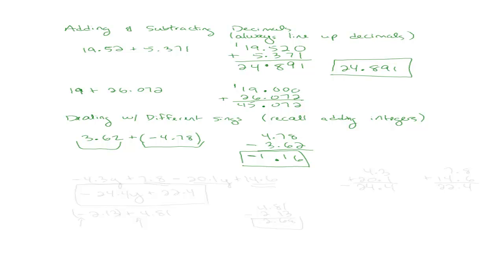Now if you think about it, that makes sense. If you have $3.62 and you owe $4.78, you're still going to owe $1.16. So let's practice this with combining like terms. Say we have negative 4.3y plus 7.8 minus 20.1y plus 14.6. What are the like terms in this expression? The y's versus the number. The y's and the constant, right? So here's a set of like terms and here's another set of like terms.